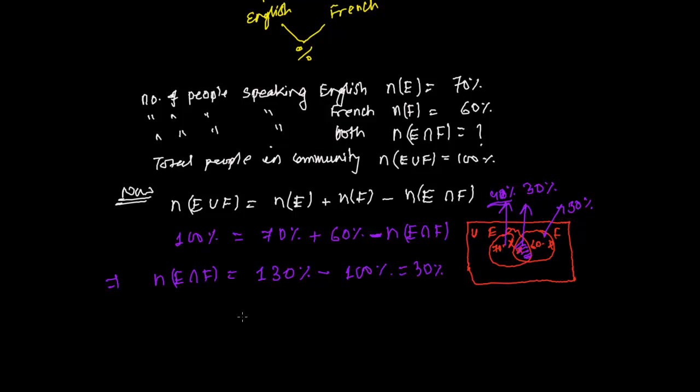This is the way how to do. And now if the question is saying to represent this into the Venn diagram, then you can easily represent that. Make like this and write here 30% first. This is English and this is French. Both speakers are 30%. You just find out English only, English speakers are total 70%, and now 30% already we have written, so it is 40%. And French speakers total is 60%, 30% we have already written, so we have to write here 30%.